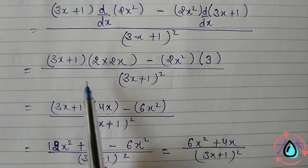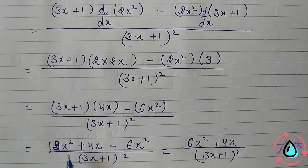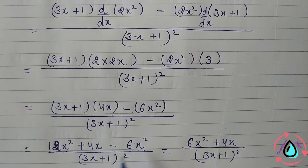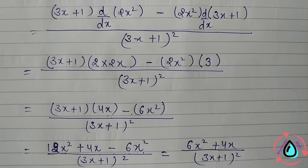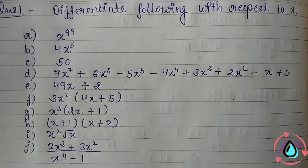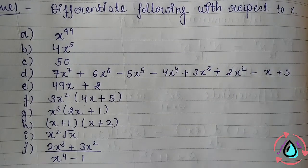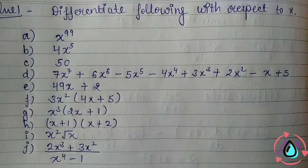Simplifying: 12x² − 6x² = 6x², so the numerator becomes 6x² + 4x, and the denominator is (3x+1)². So the required derivative of 2x²/(3x+1) is (6x²+4x)/(3x+1)². All 6 rules are now complete. I hope you understood them. I have written 10 practice questions for you — solve them, find the answers, and if you like, write the answers in the comment box. If you liked the video, please subscribe to the channel and like it. Bye bye.